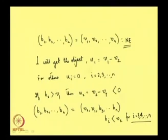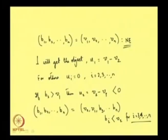Here, player 1 is submitting a bid equal to V_2, player 2 is submitting a bid equal to V_1, and other players are submitting bids strictly less than V_2.